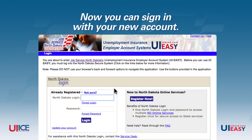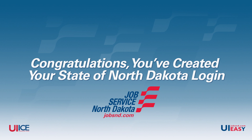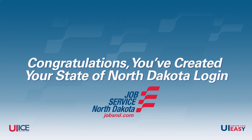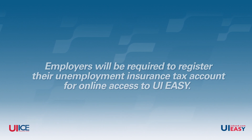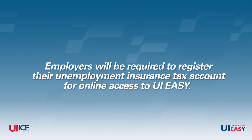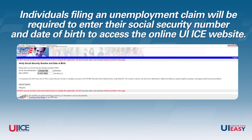Now you can sign in with your new account. Congratulations! You have completed the first step of your two-part secure login process. During the second part of the secure login process, employers will be required to register their unemployment insurance tax account for online access to UI Easy. Individuals filing an unemployment claim will be required to enter their social security number and date of birth to access the online UI ICE website.